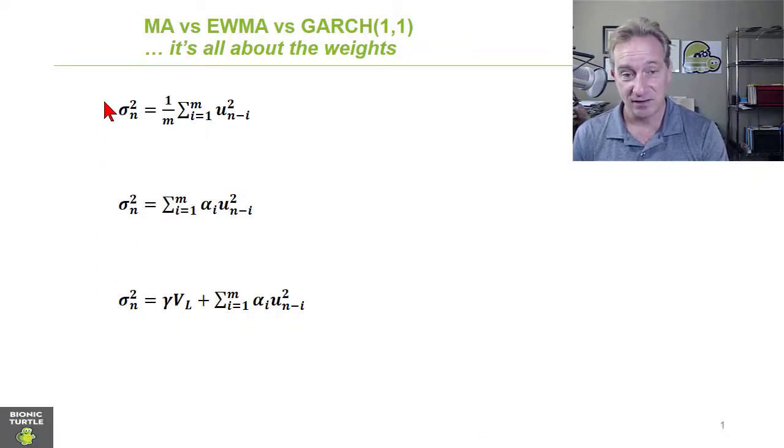All three approaches to an estimate of today's variance have in common the U squared, where U is the return, probably a daily return, and so U squared is a squared daily return going back over some historical window.